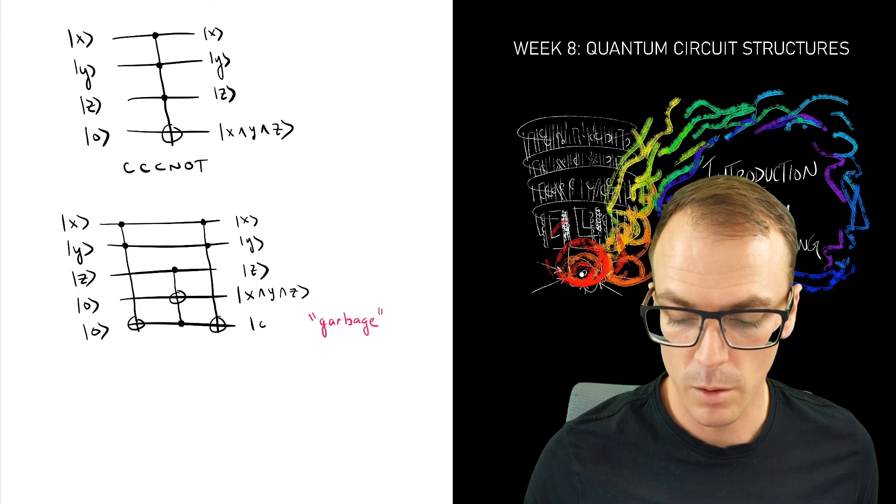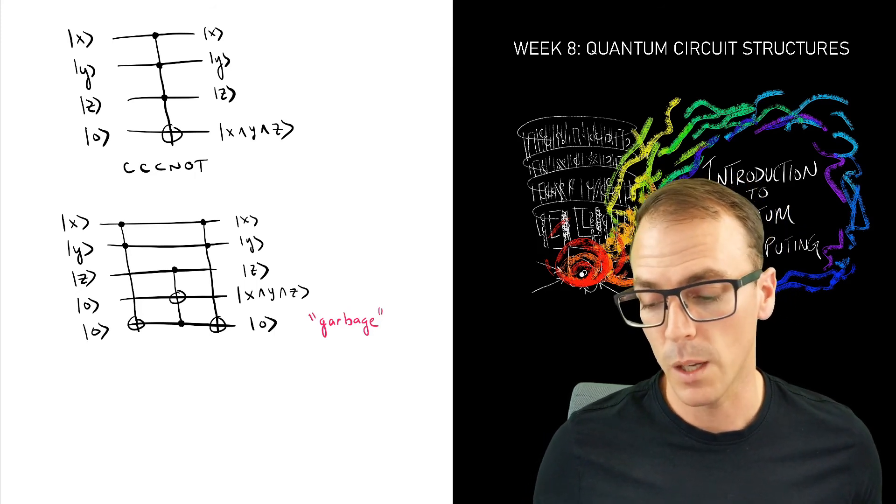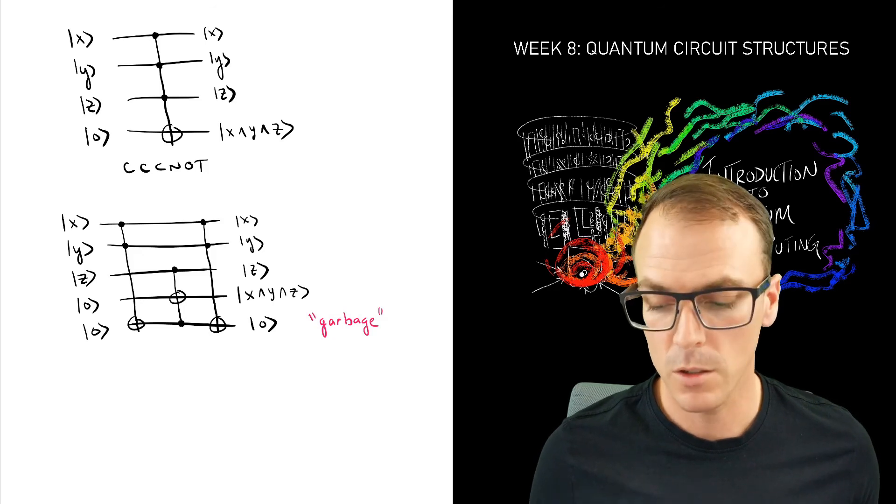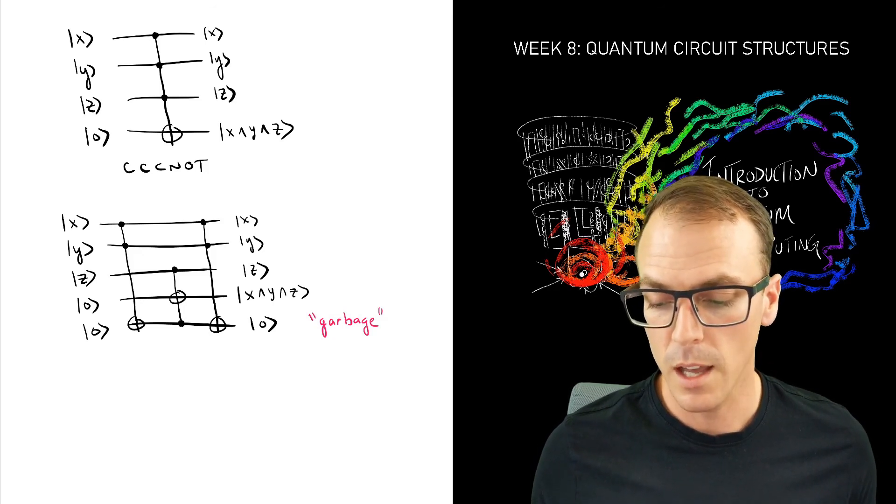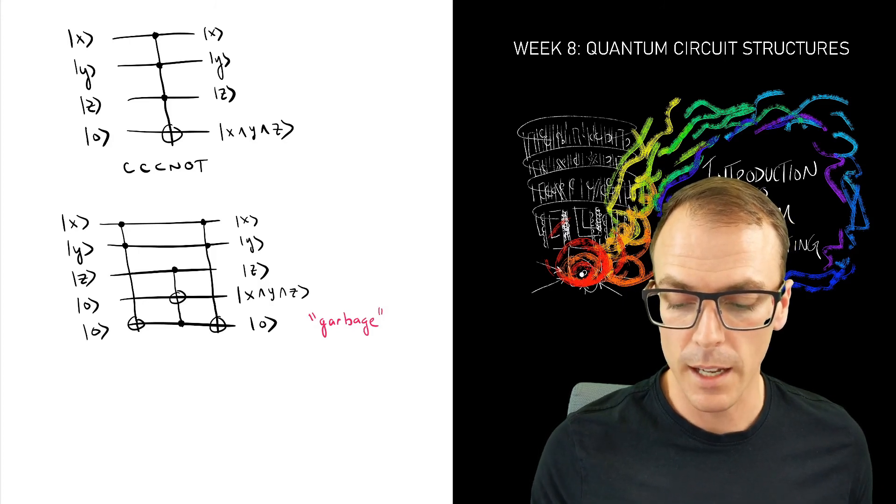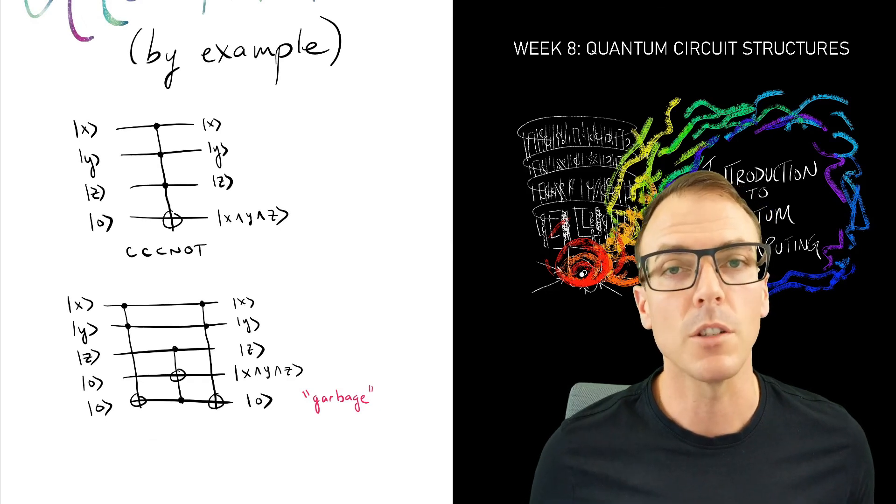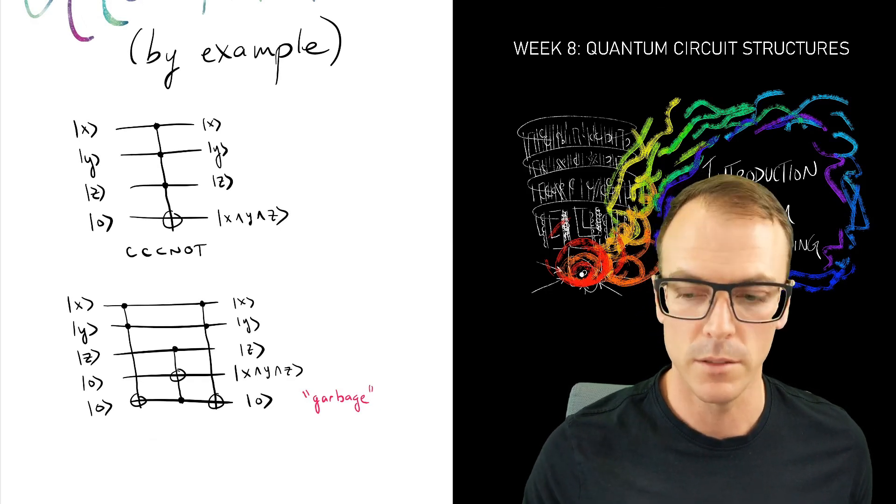And we've returned the original garbage qubit to its original state. And now we have the data and the output alone, just as in the original controlled-controlled-controlled NOT gate.